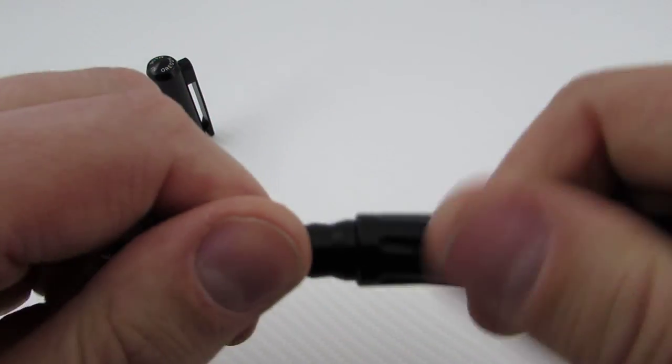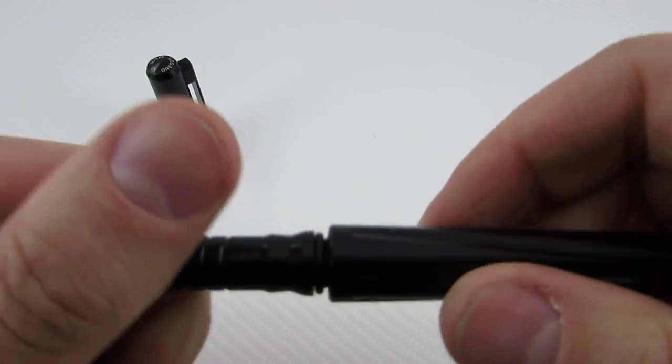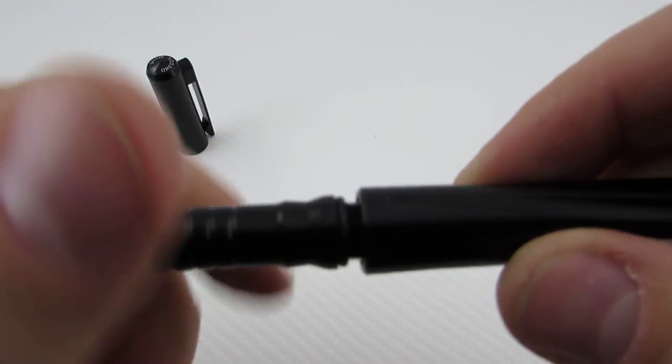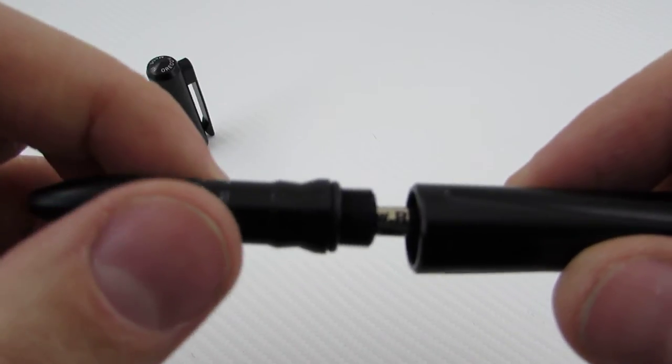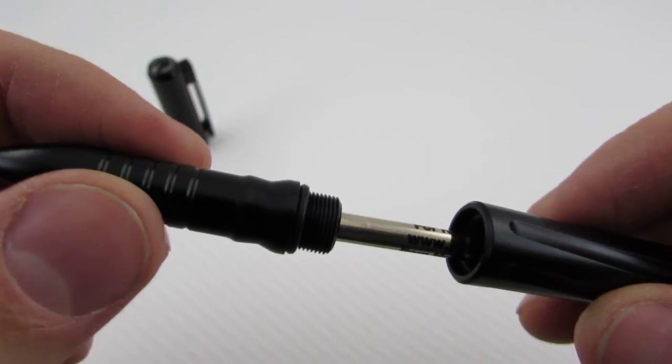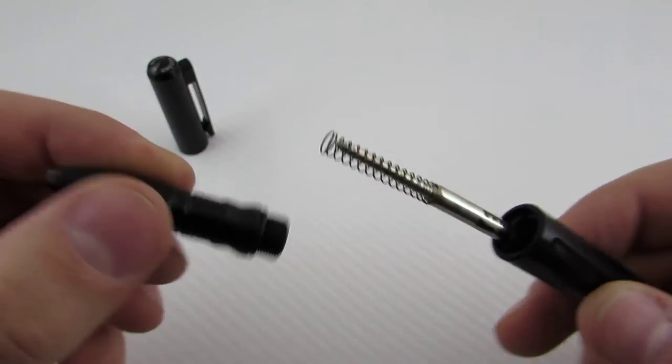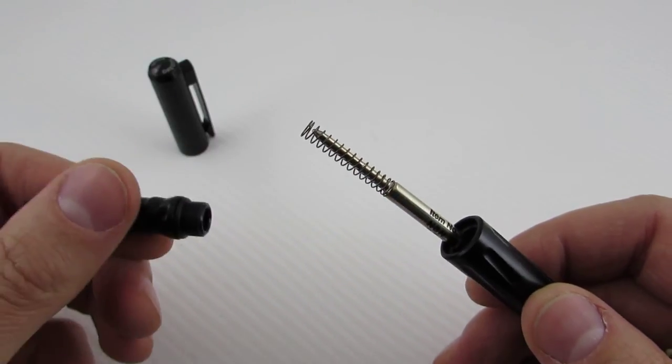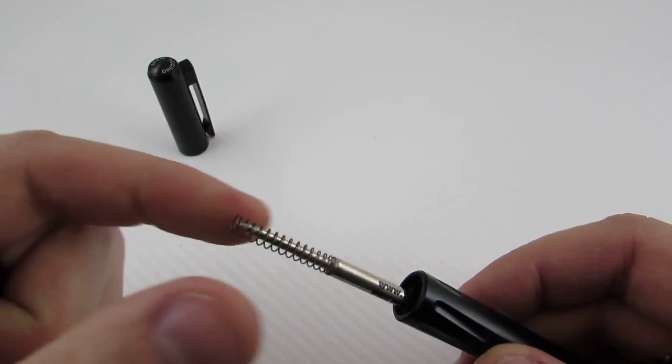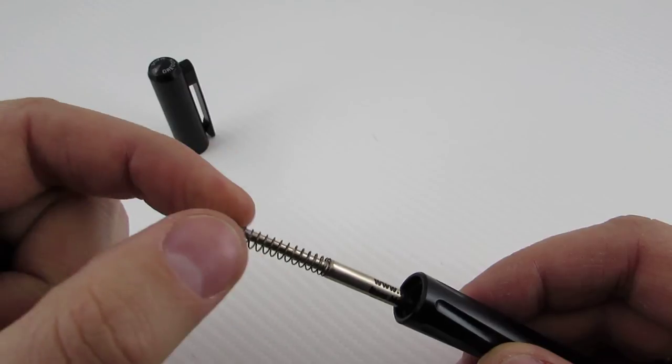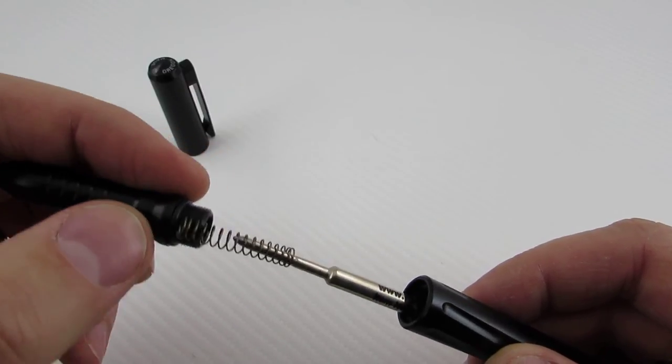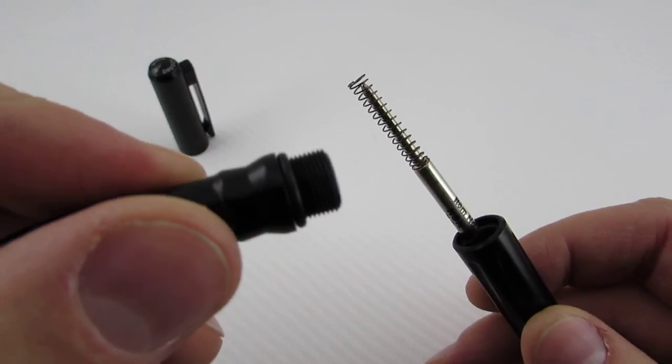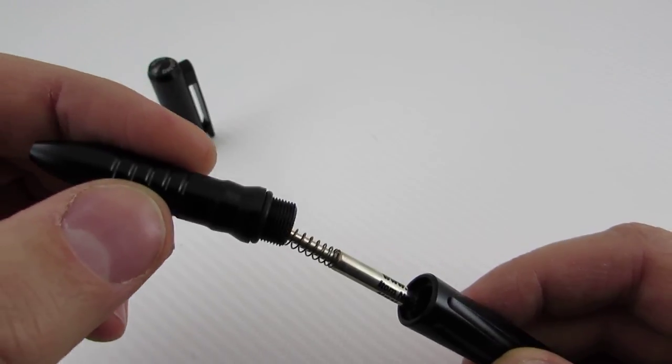Here is what it looks like when we open it up. Nice clean threads, great retention. It has not loosened while carrying it in my pocket which is a problem that I had with my Benchmade, I actually had to Loctite it. Here is the right in the rain cartridge as well as a spring and then there is an O-ring on here as well to keep any moisture or anything out.